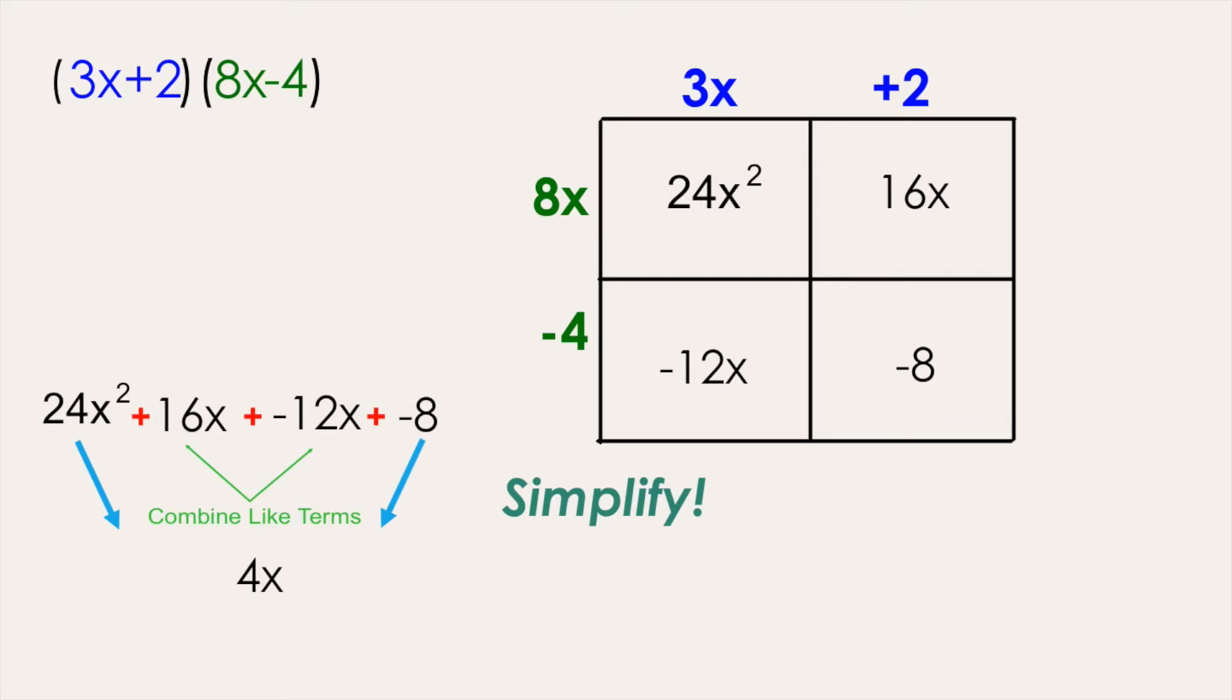24x squared and negative 8 don't have any like terms, so those remaining terms can be brought down, and again you want to separate each of your terms with addition symbols.